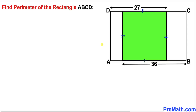Let's go ahead and get started. Here's the very first thing we are going to do. Let's focus on this green shaded square — since it has all equal sides, let me go ahead and label this side A, then this side is going to be A, this side is going to be A, and this side is going to be A as well.